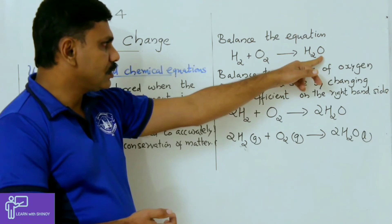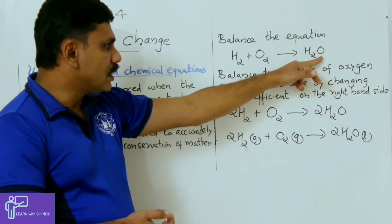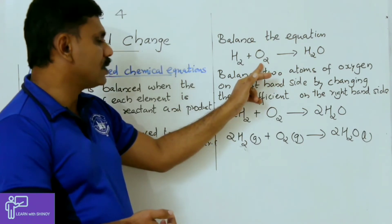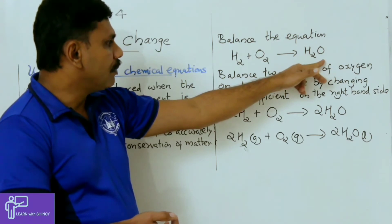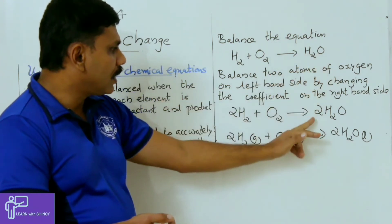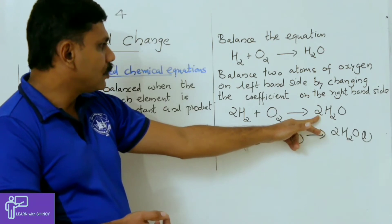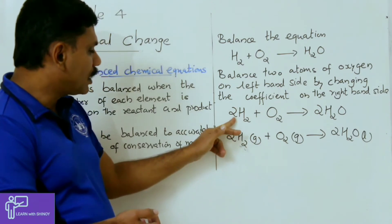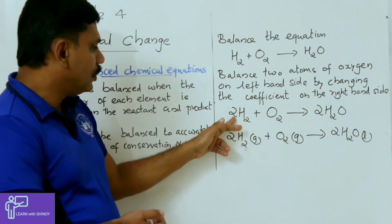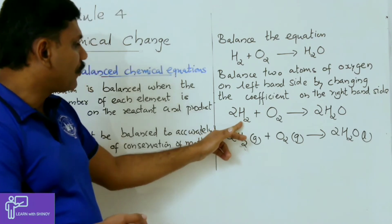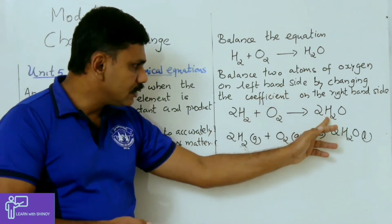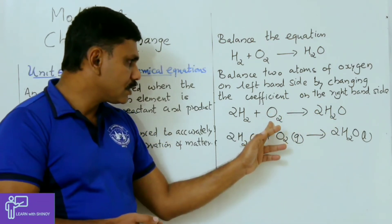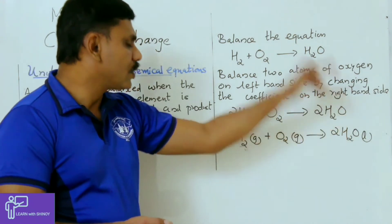There is only one oxygen on the right side. So we make the oxygen 2 on the right side, because on the left side there are 2 oxygen atoms. By multiplying with 2, the number of hydrogen atoms on the right side becomes 4. Then on the left side we also multiply with 2, giving 4 hydrogen atoms on the left and 4 on the right. On both sides there are now 2 oxygen atoms.